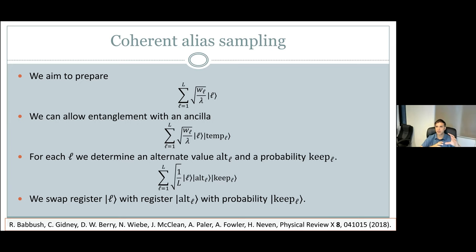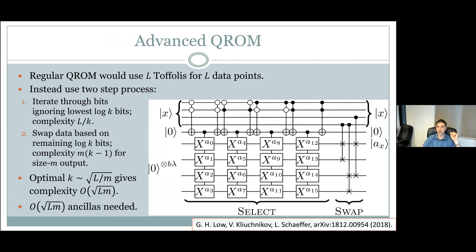There is a more efficient scheme from 2018 that divides the control register into high qubits and low qubits. For each value on the high qubits, you output every item of data for every possible value of the low qubits. Then the right half of the circuit does controlled swaps, controlled on the low qubits, swapping the desired data into the output register. The overall complexity goes like the square root of the number of items of data multiplied by the number of bits per item — essentially the square root of the total bits of data. This QROM gives an overall algorithm complexity scaling like the square root of the data in the Hamiltonian.